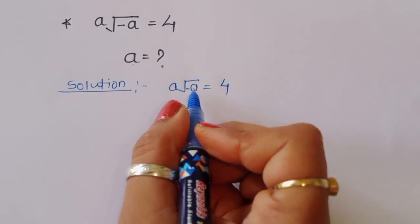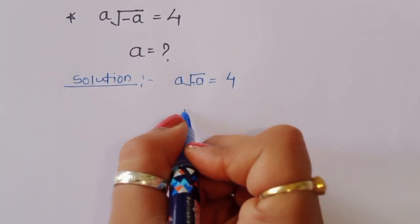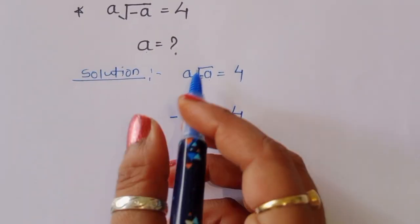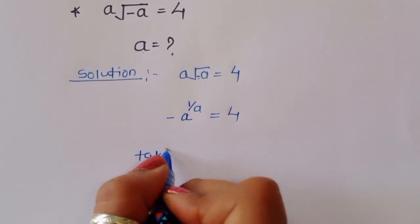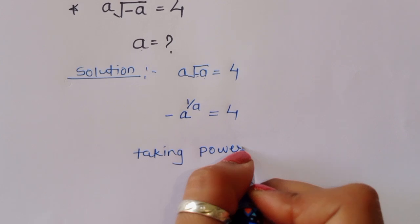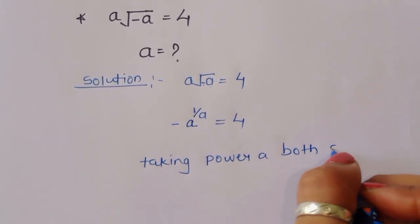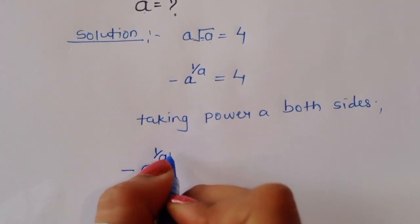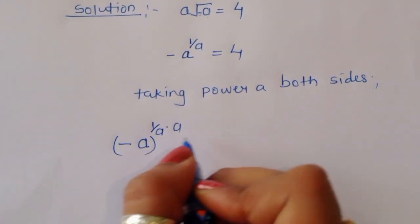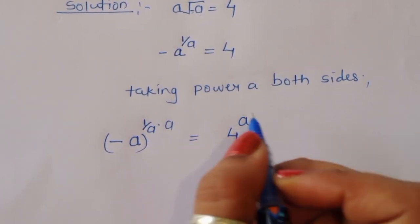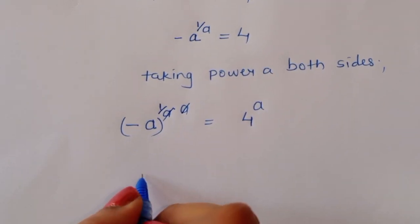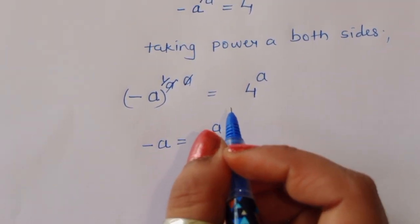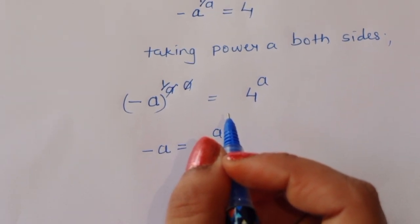We can write this as minus a to the power one upon a is equal to 4. Now we can take power a on both sides. Then we will get minus a to the power one upon a, raised to power a, is equal to 4 to the power a. The a's cancel, so minus a is equal to 4 to the power a.